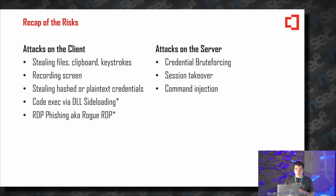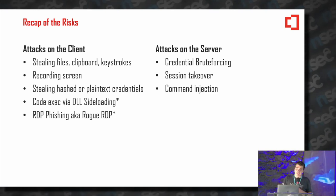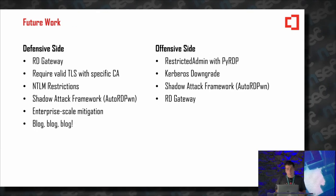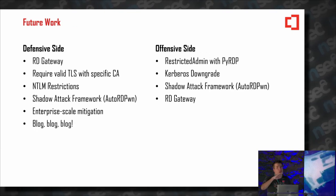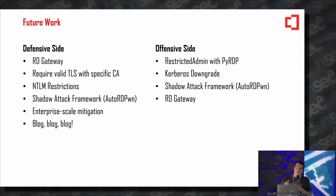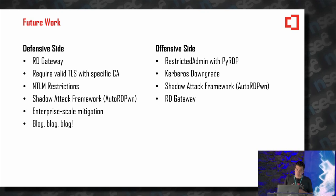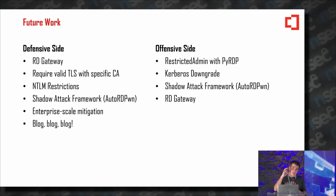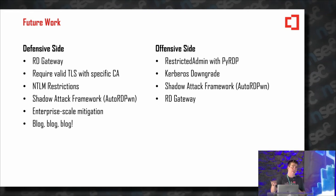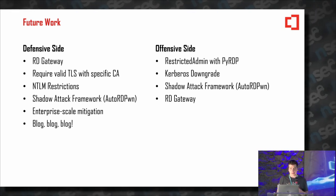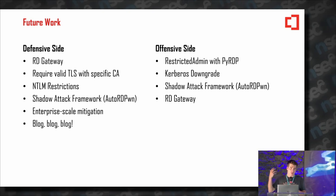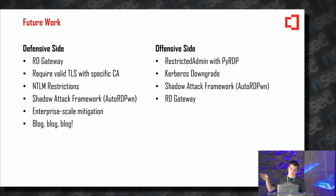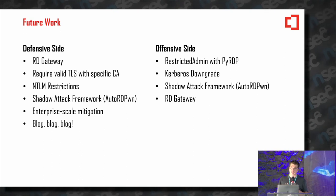We need to talk about the blue stuff too. Attacks that can be done on the server: credential brute forcing, session takeover, command injection. Future research: RD Gateway — I'm not looking at remote desktop gateways at all, but I can probably support and attack them. I'd like to see options for requiring the TLS certificate to come from a specific CA — otherwise don't allow the connection. This would eliminate the 'Let's Encrypt can sign any cert' problem. I also want to look at NTLM restriction, the Shadow framework (both defensive and offensive), and start documenting this stuff in blog posts.